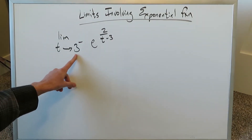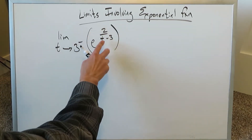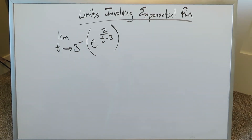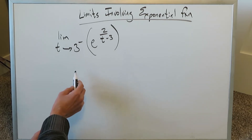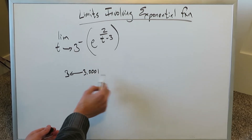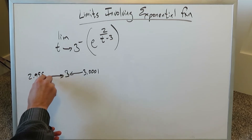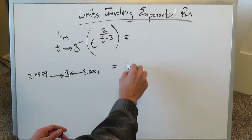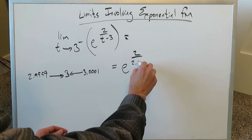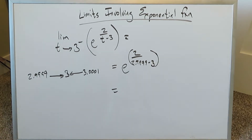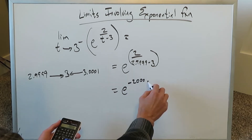Let's look at this next question: limit as t approaches 3 from the left of e to the power of 2 divided by (t minus 3). Since we're approaching 3 from the left, let's use a left-hand limit approximation. We think about 2.999 and plug that in place of t. We evaluate e to the power of 2 divided by (2.999 minus 3) on our calculator and see what we get.